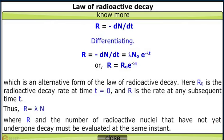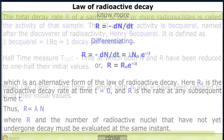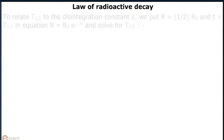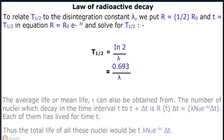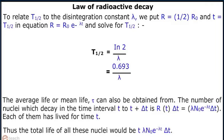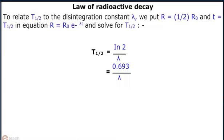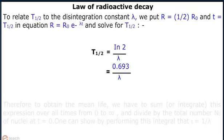Mean lifetime is the time at which both N and R have been reduced to e^(−1) of their initial values. Half-life is the time at which both N and R have been reduced to one half of their initial values.